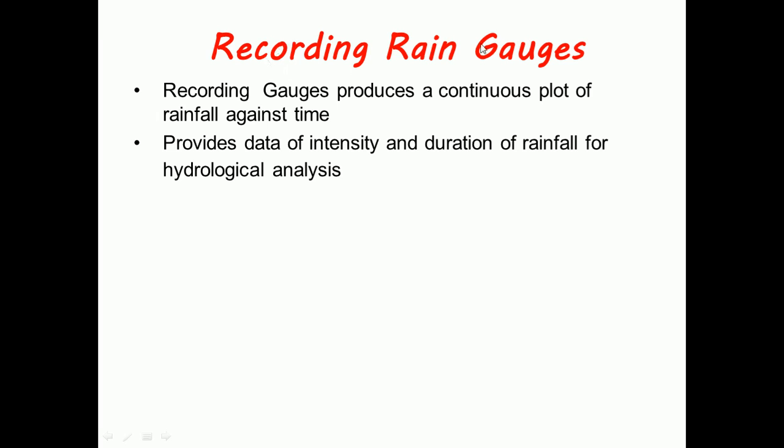Talking about recording rain gauges, they produce a continuous plot of rainfall against time. Unlike non-recording gauges where you get only one day rainfall data, here you can produce rainfall data for multiple days.